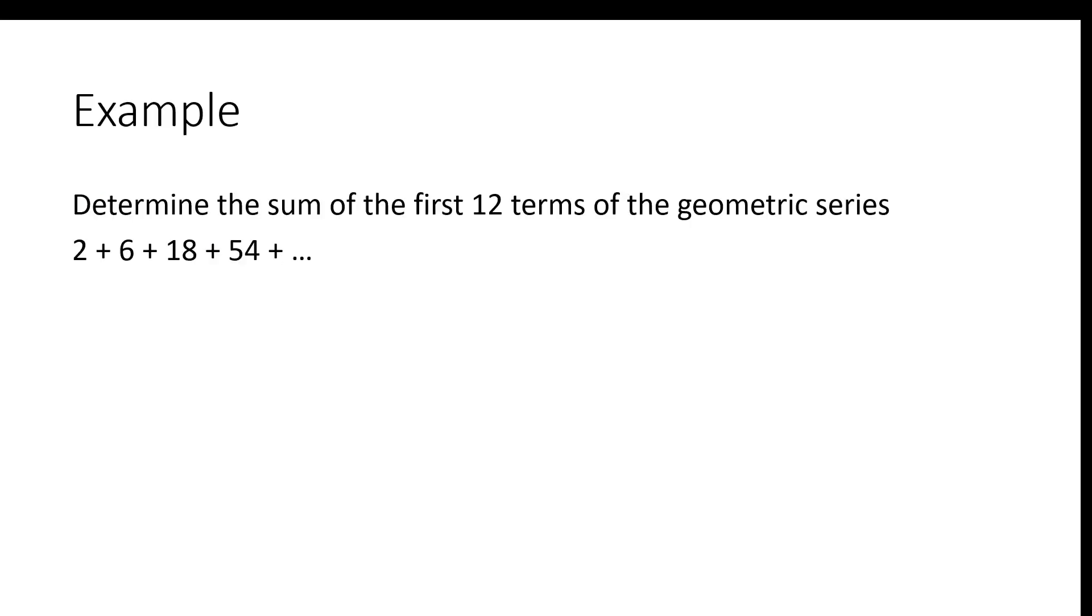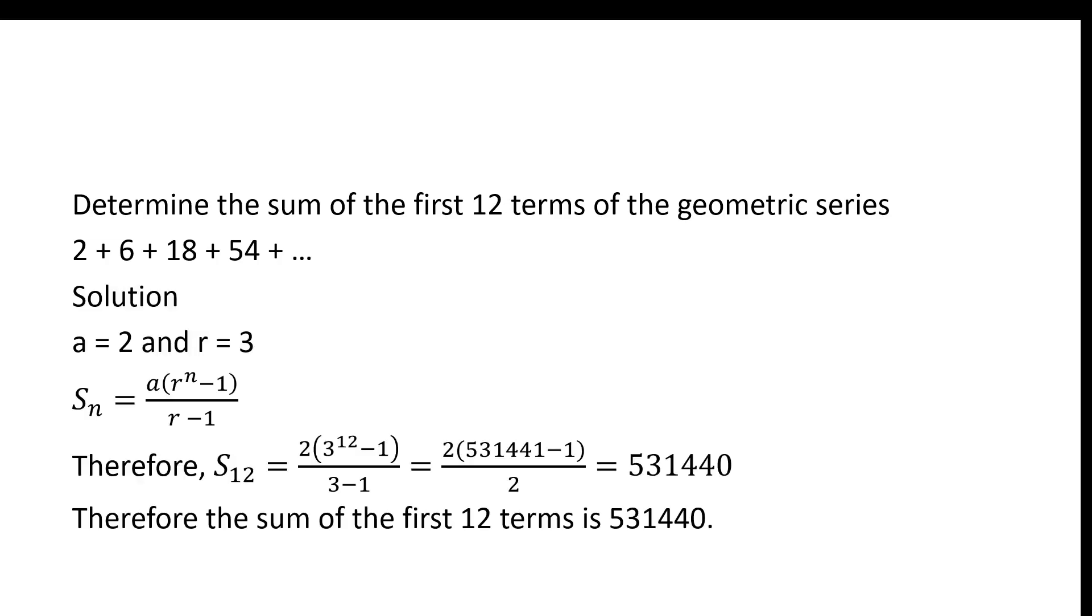So suppose we wanted to determine the sum of the first 12 terms of the geometric series shown. What we would do is simply say right away that A is equal to 2 and R is equal to 3. 2 is the first term, and 3 is what we're multiplying to get each subsequent term. Then we'd be able to say that S_N equals A times R to the N minus 1 over R minus 1. So letting N equal 12 and letting A equal 2 and letting R equal 3, we end up with 531,440. That's the sum of the first 12 terms.